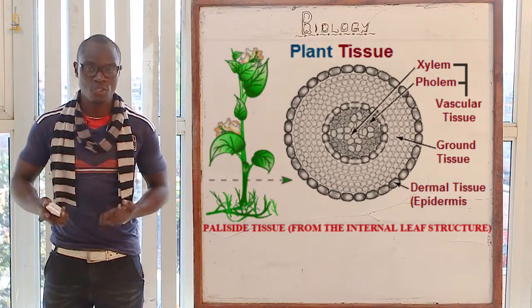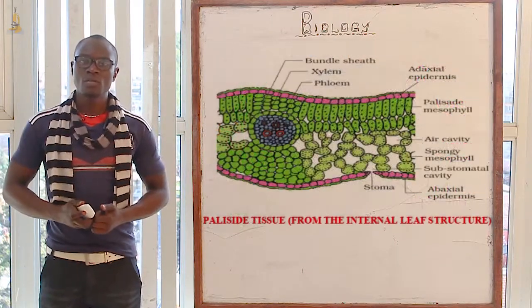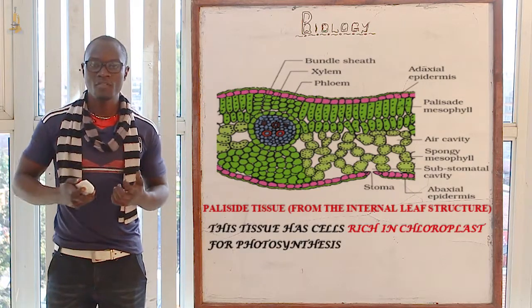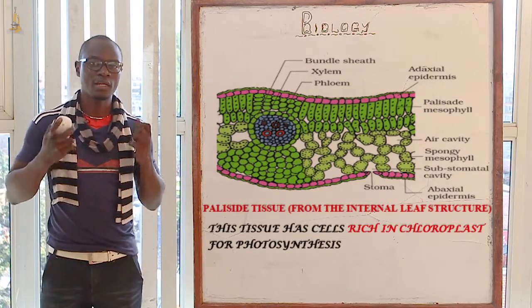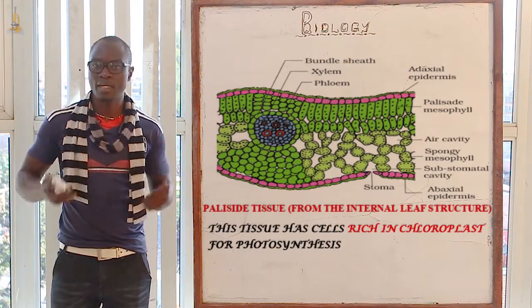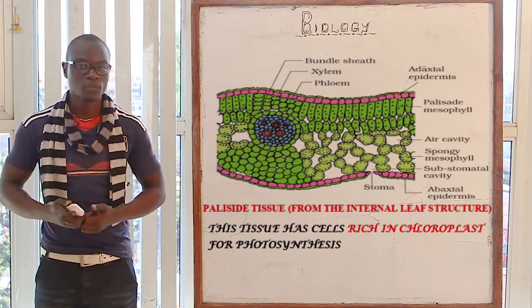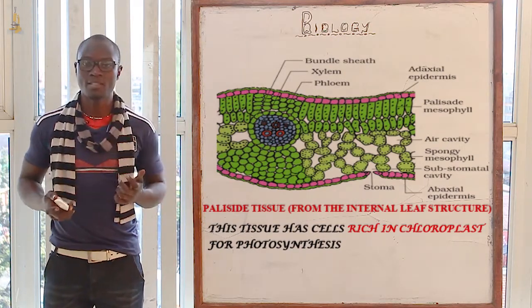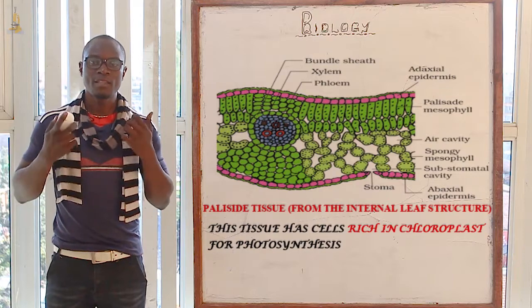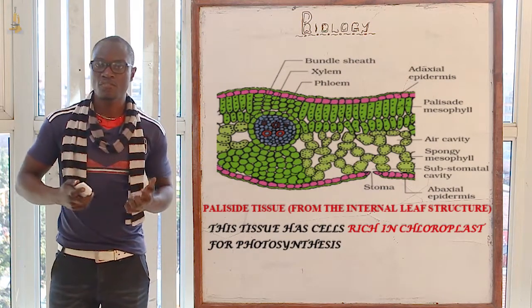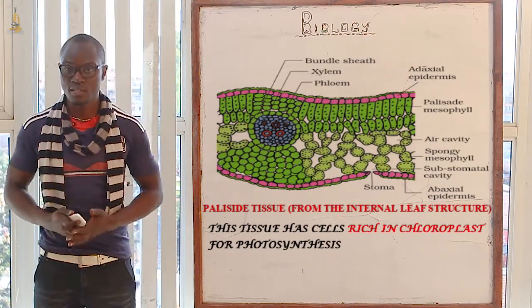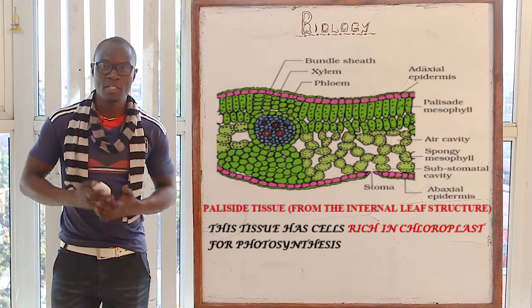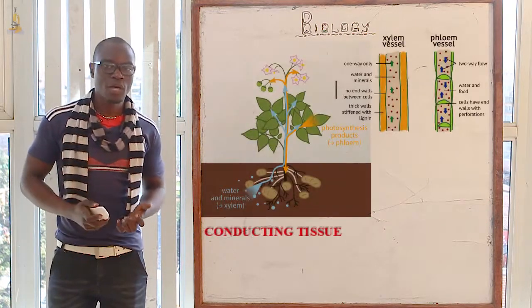The next tissue in plants is the palisade tissue. In the palisade mesophyll, these cells are richly impregnated with chloroplasts. The function of the chloroplasts is that they serve as an agent for photosynthesis, and that is the function of the palisade tissue.